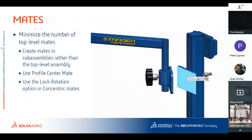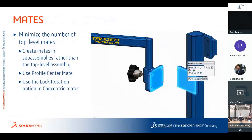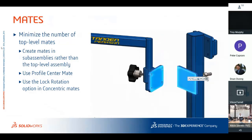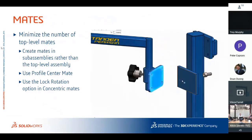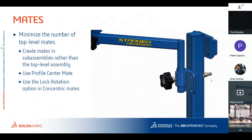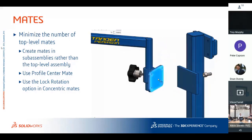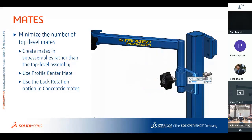The first recommendation is to minimize the number of top-level mates. Every time you do a rebuild or open an assembly, SolidWorks is looking to solve those mates. The more you have at the top level, the more it bogs down performance. The solution is to use sub-assemblies — as many as you can. When you bring sub-assemblies into the top level, it's like they're dipped in glue: it's a rigid assembly, so SolidWorks doesn't solve those internal mates. Whatever position it was saved in, it comes in at that position.